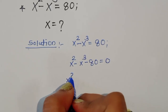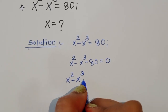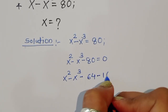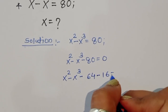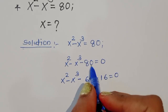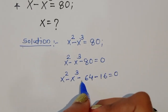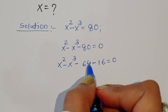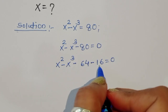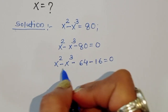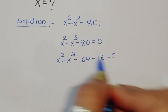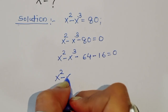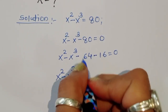We can write 80 as 64 minus 16, since minus 64 minus 16 equals minus 80. Now 4 cubed is 64 and 4 squared is 16. Because this term is in cube form and this term is in square form, we convert accordingly. So we now have x squared minus x cubed minus 64 plus 4 cubed minus 4 squared equals 0.